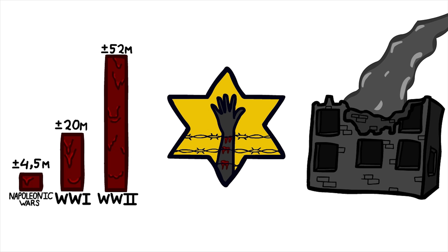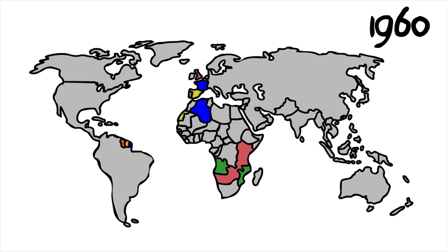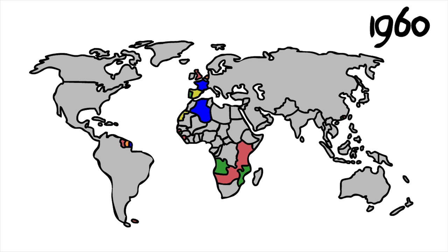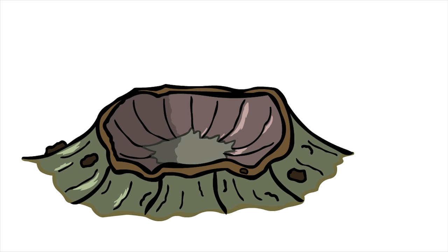This war changed world politics. After this war all European powers were forced to give up their lucrative colonies over time and lost their status as world powers. An iron curtain split Europe into two opposing factions, and the threat of nuclear annihilation hung over everybody's head.